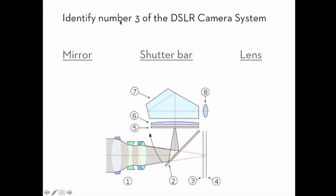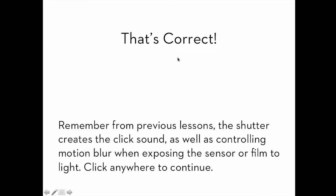We're going to identify the number three of the DSLR design scheme. Is it mirror, shutter bar, or lens? Number three is right here. Is it mirror, shutter bar, or lens? Okay, of course, it's the shutter bar. That's correct. Remember the previous lessons? The shutter creates the click sound, as well as controlling the motion blur when exposing a sensor or film to the light.